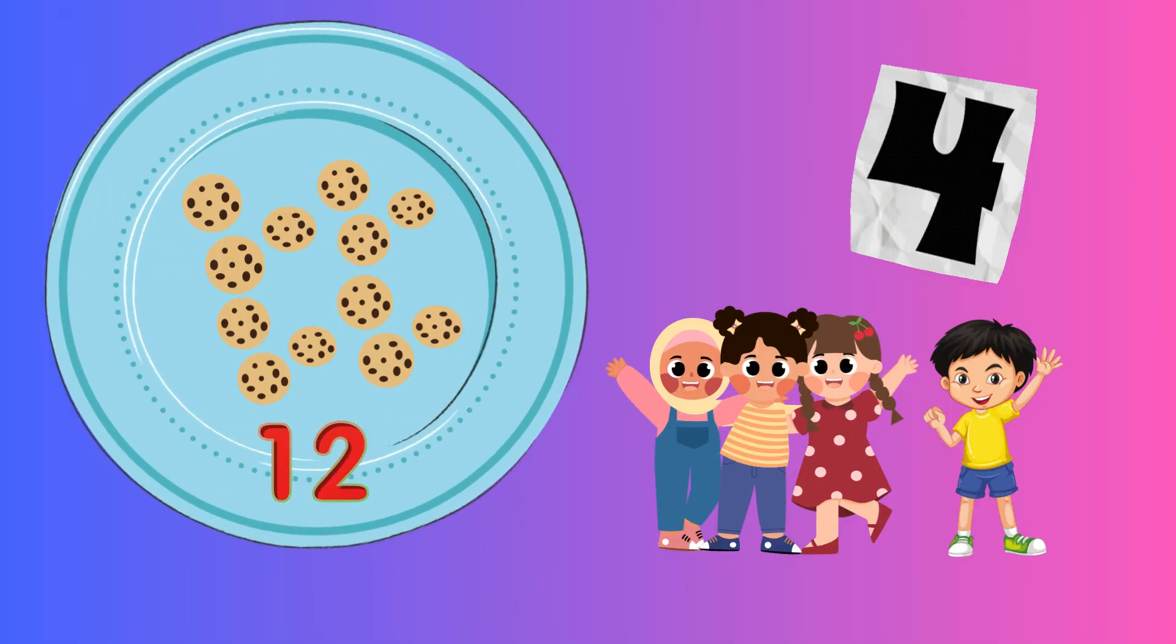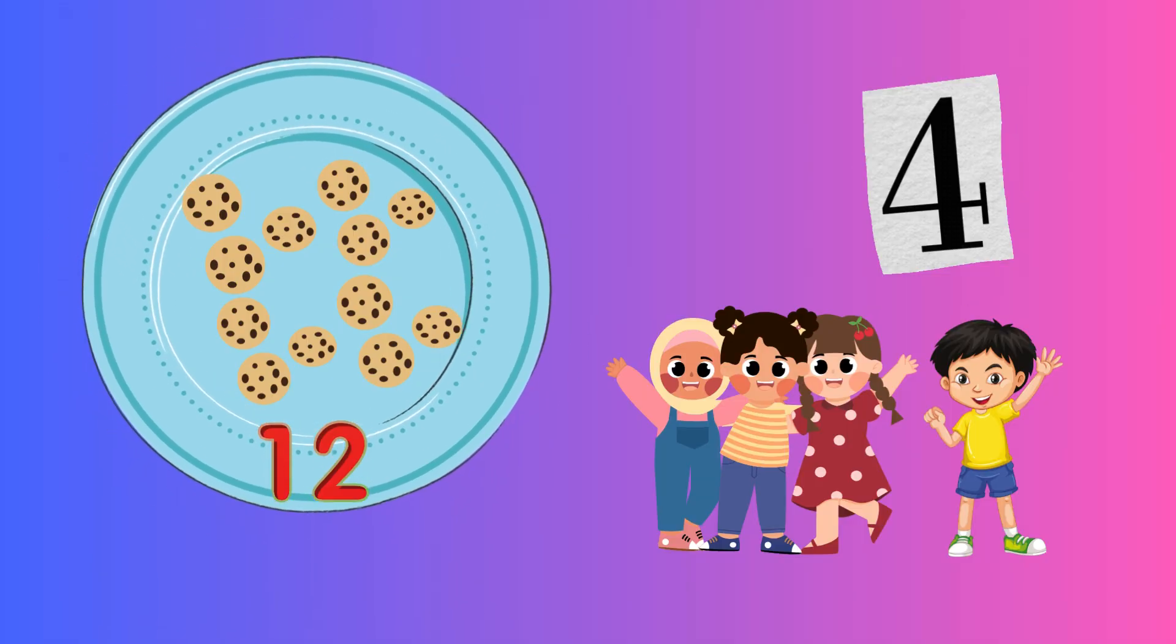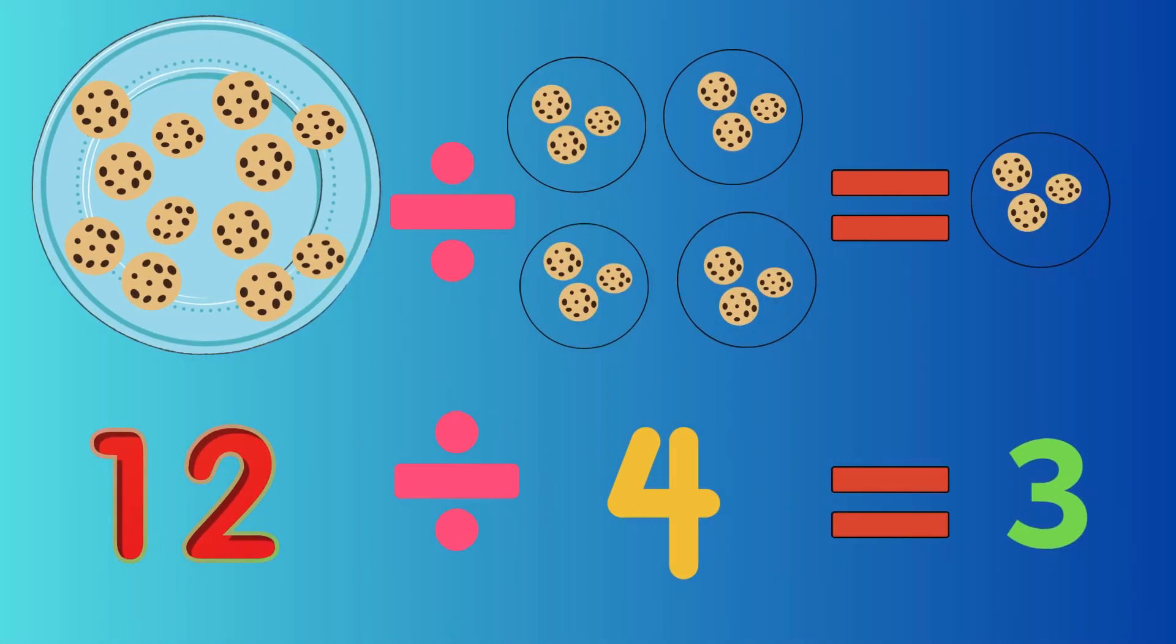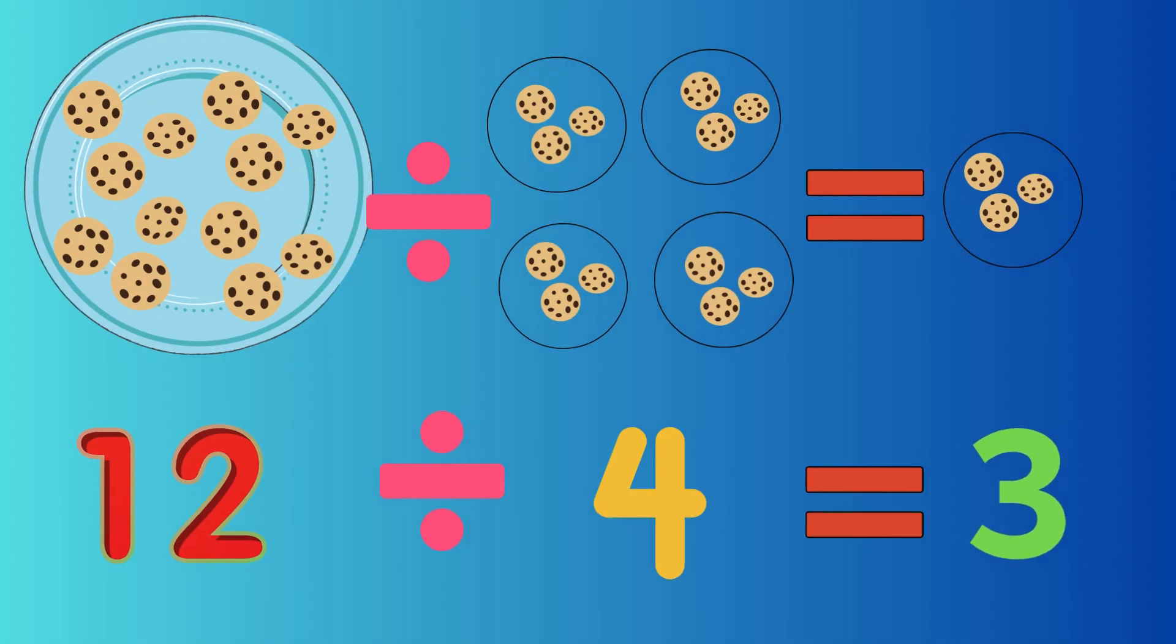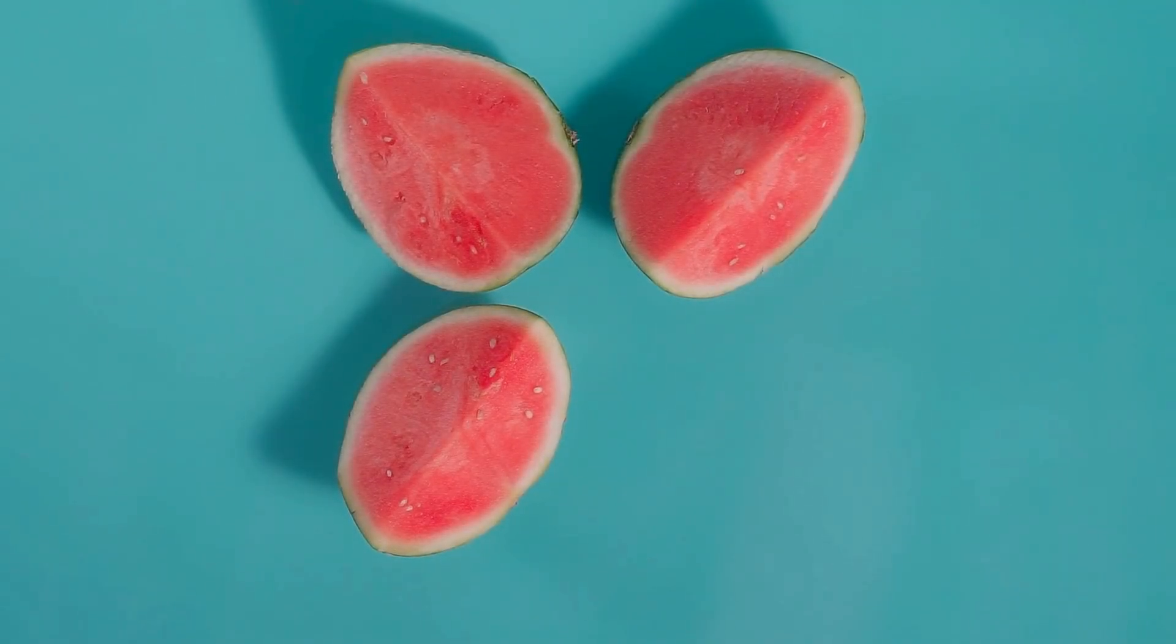If you've got twelve cookies on a plate and four friends who just can't wait, you divide, so what's the score? Twelve divided by four equals three each! Each friend smiles with delight cause sharing makes the math just right!